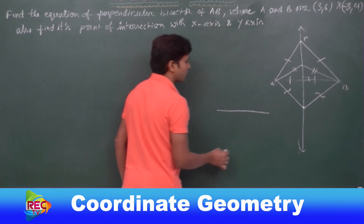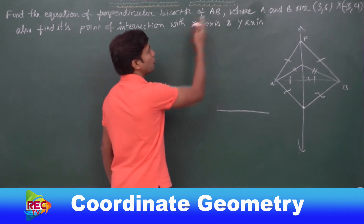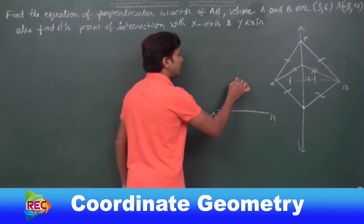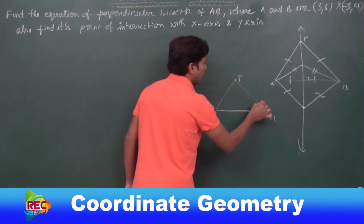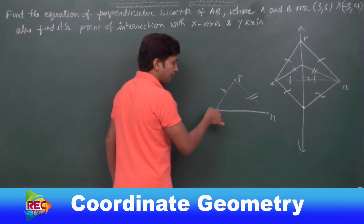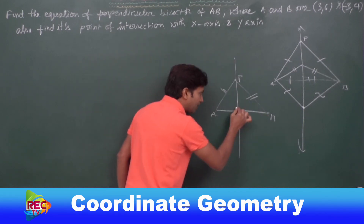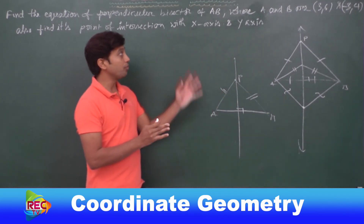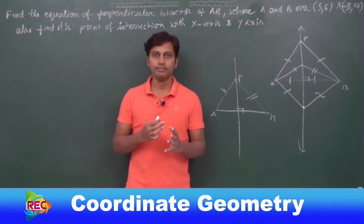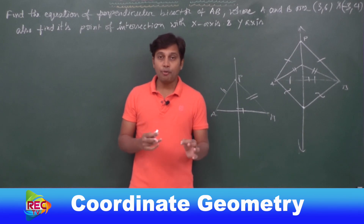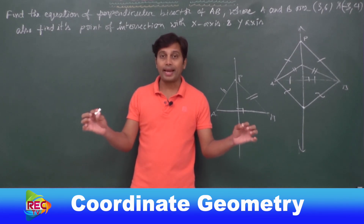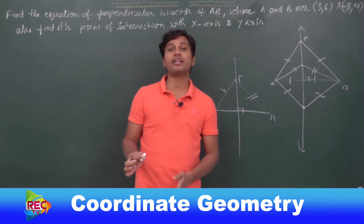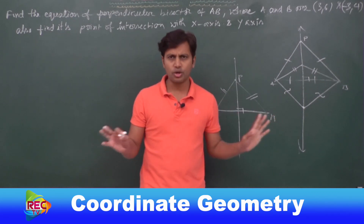Without clarity on this concept you can't solve the problem. If I take line segment AB and choose some point P which is equidistant from the endpoints A and B, then it lies on the perpendicular bisector. So conversely, any point equidistant from the extremes or endpoints of any line segment lies on the perpendicular bisector of that line segment.